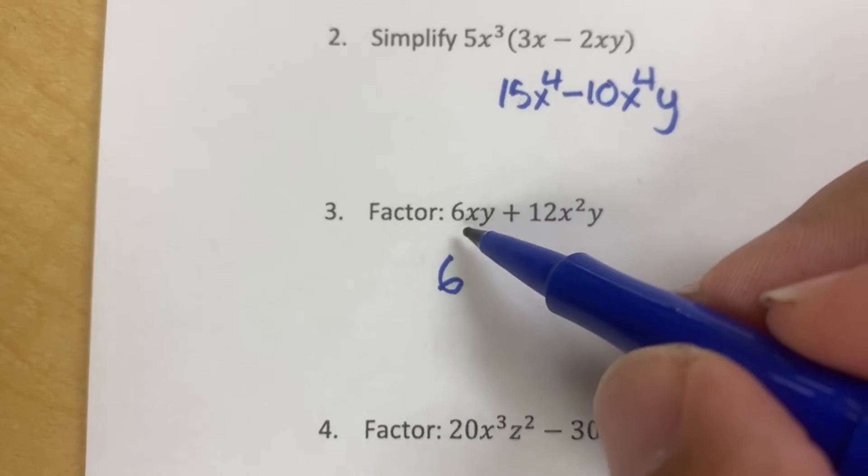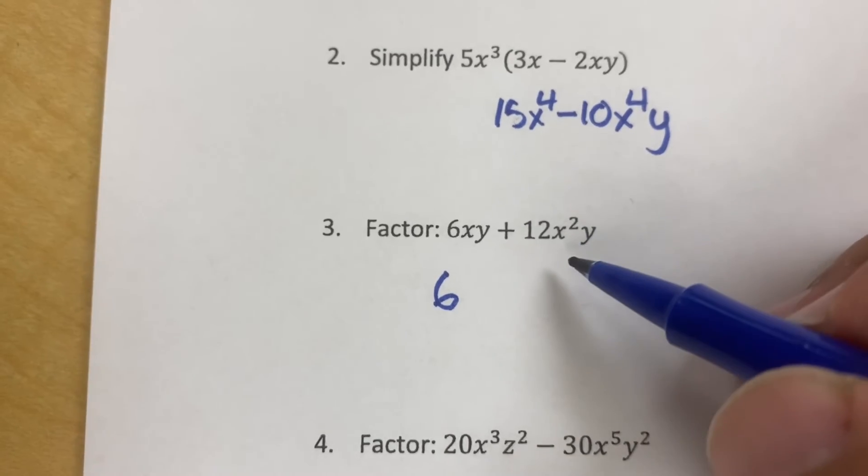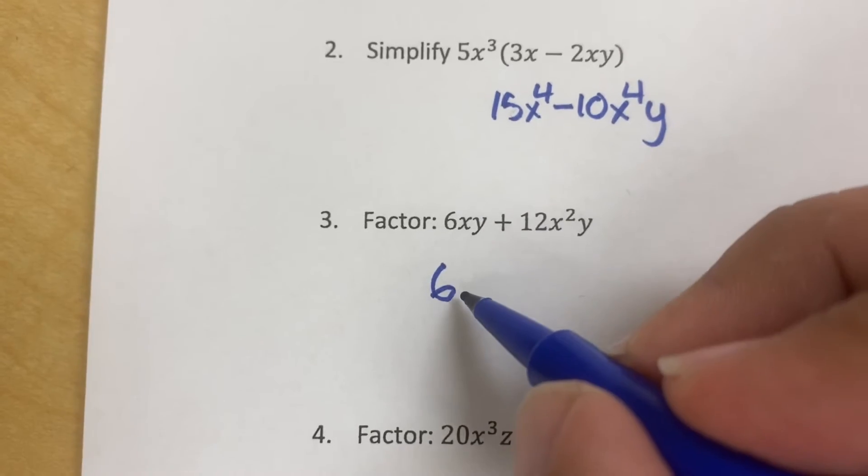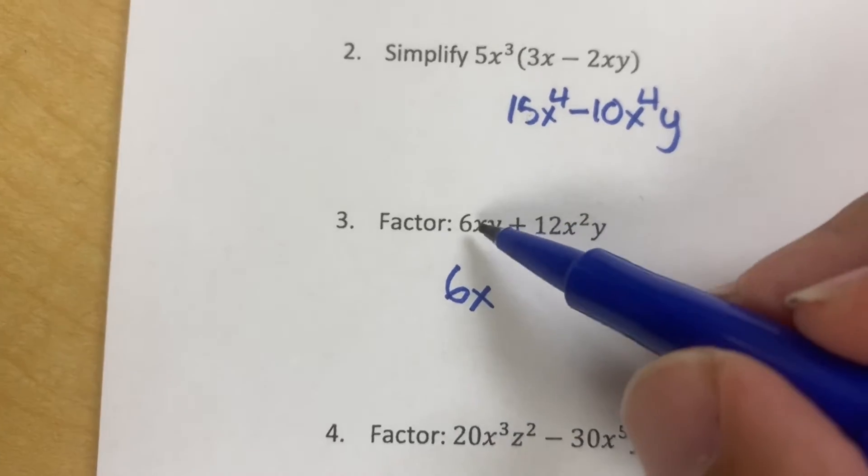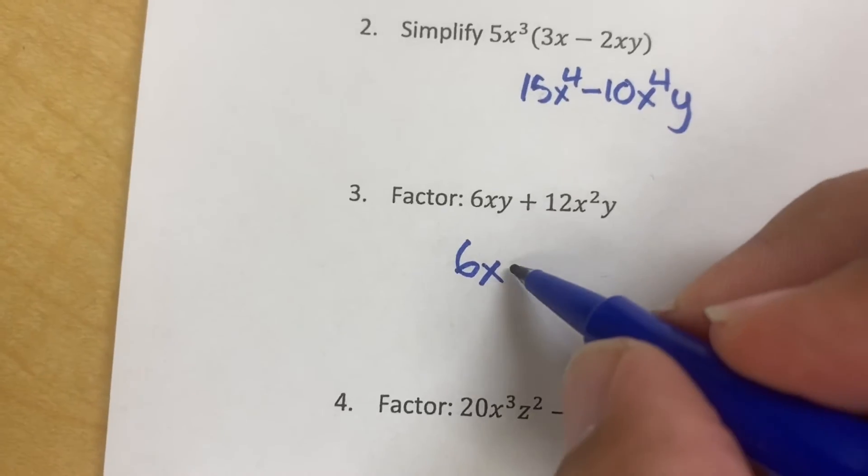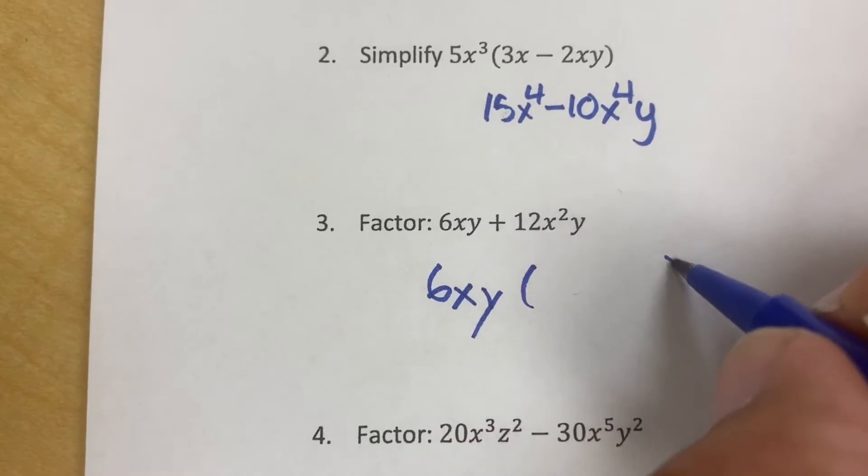How many x's do they have in common? Well, this has 1x, and this has 2x's. So they only have 1x in common. So I'm going to take an x over here. Now a y and a y, they only have 1 y in common. So I'm going to take out a y.